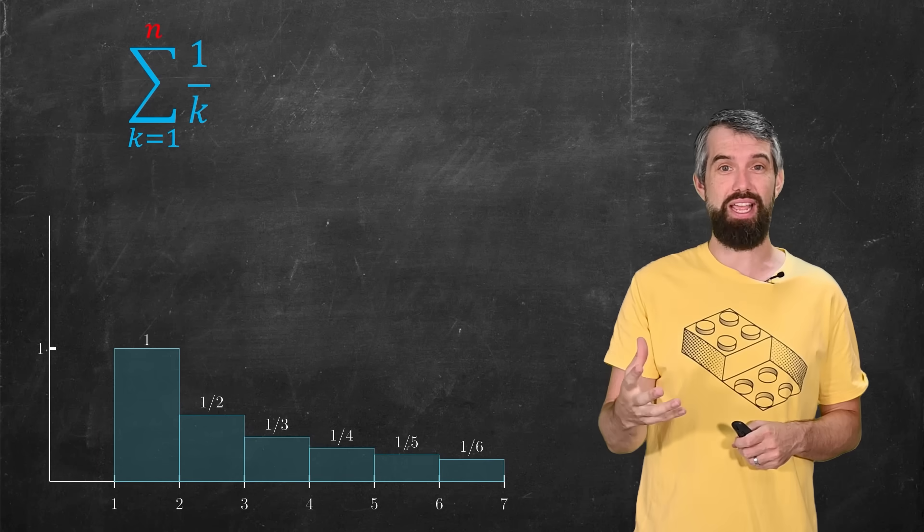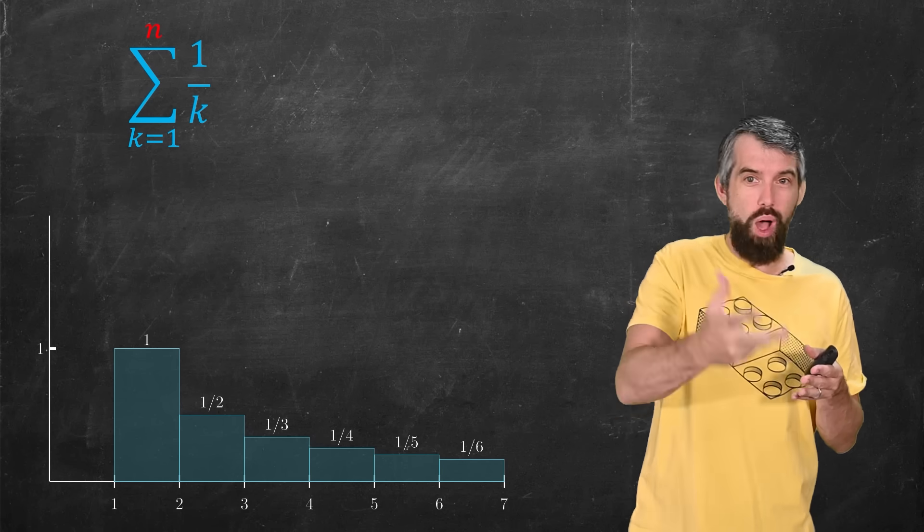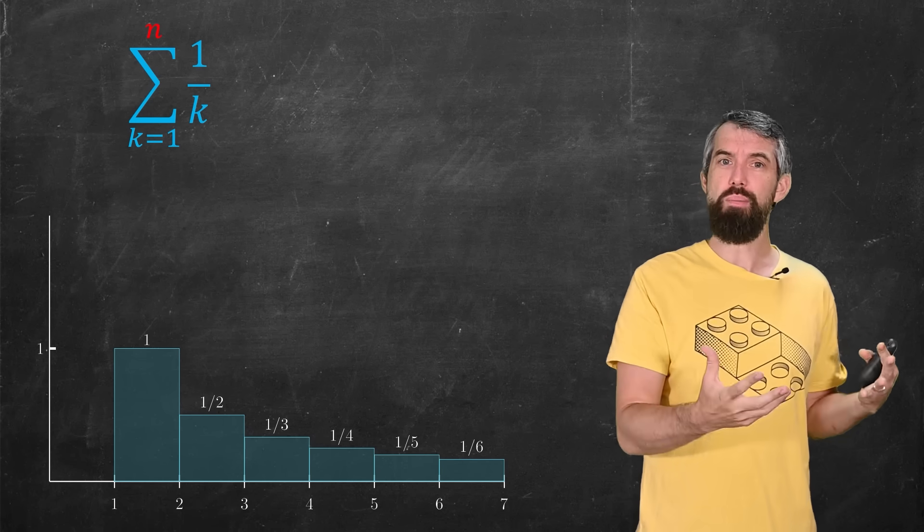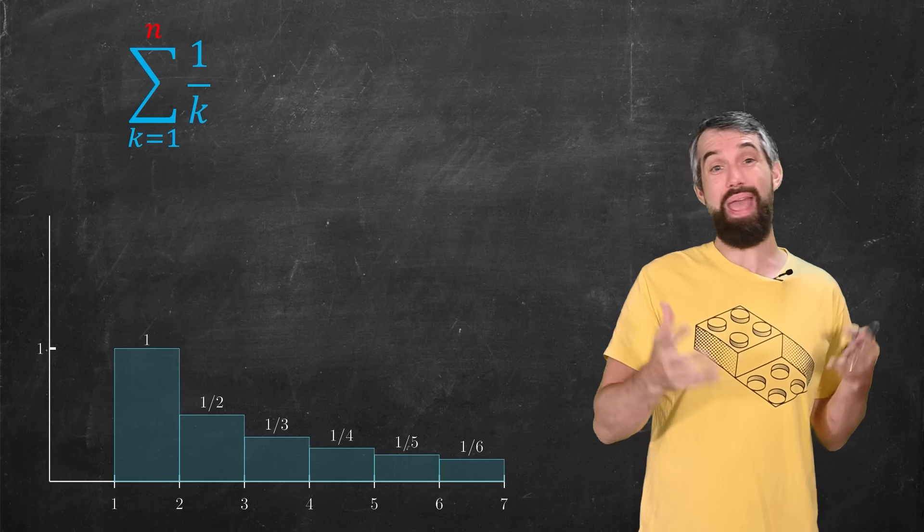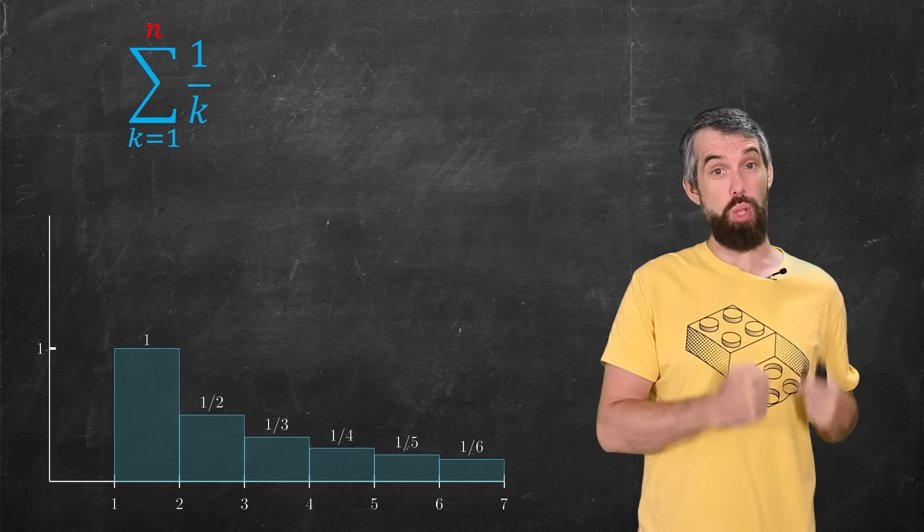I want to imagine a bunch of rectangles. It's like rectangles always of width 1, but then heights 1, 1 half, 1 third, 1 fourth, and so on. And so the sort of partial sum of this harmonic series, if I add up n of these terms, is the same thing as the area of adding up n of these blocks.